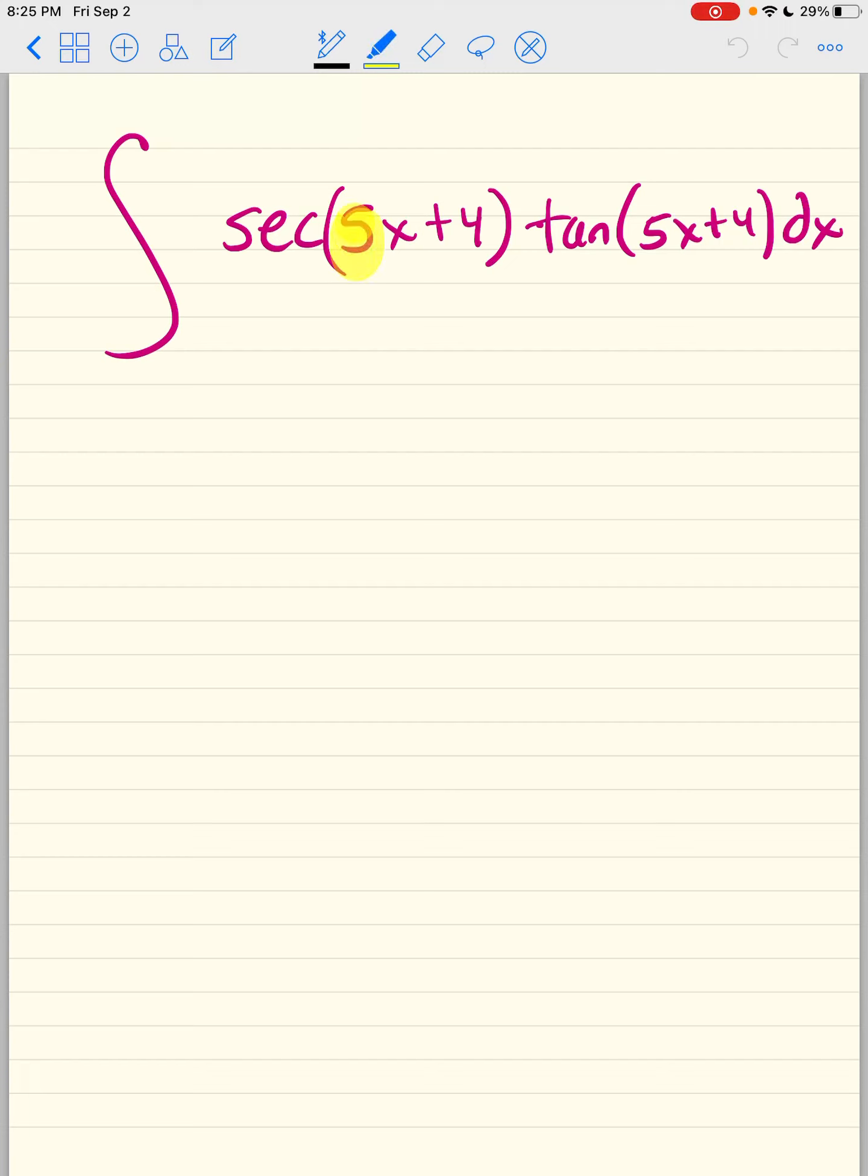Here. Why do we have to do a u-sub? Because the angles are other than 1x. So what is my u? 5x plus 4. The derivative of u is just 5. Let's swap their positions.